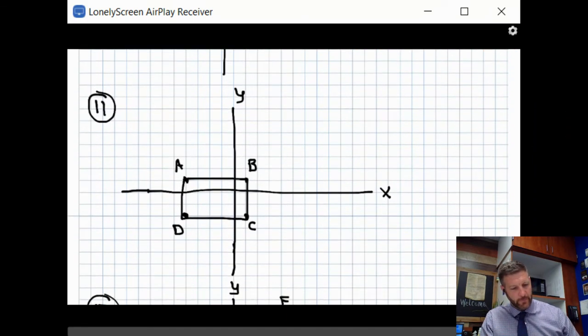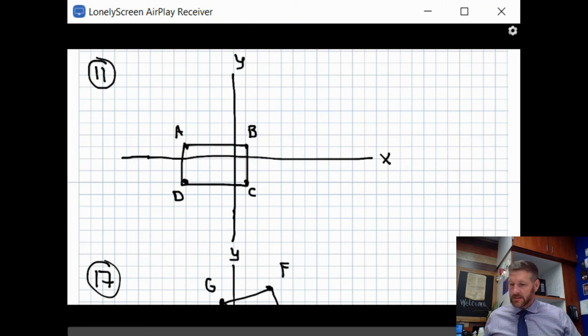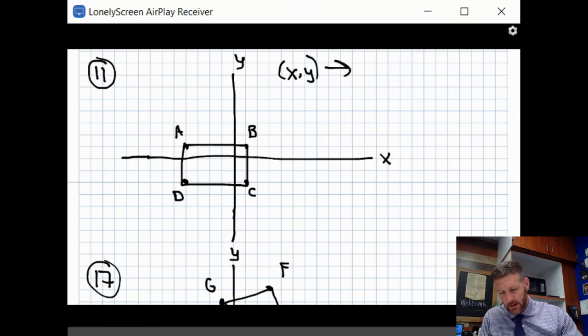Number 11 gives us coordinates of A, B, C, D. I went ahead and already drew that. Then it says find the coordinates of the image after the translation. It gives us this rule, which says XY is X plus three and Y minus two. Don't be scared by the notation. Hopefully you see how simple it is.